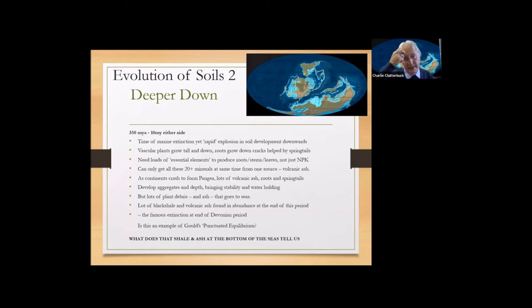And that was when the aggregates started forming, because there was a lot more chewing and pooing going on. And the evidence for this is that at the end of this period, geological period, the Devonian period, they found lots of black shale in the sea and lots of volcanic ash. And you start to think, what does that tell us at that point? What does shale and ash at the bottom of the seas tell us? Well, clearly it's telling us that the plants are growing and that there's a lot of volcanic ash about and the two are together.